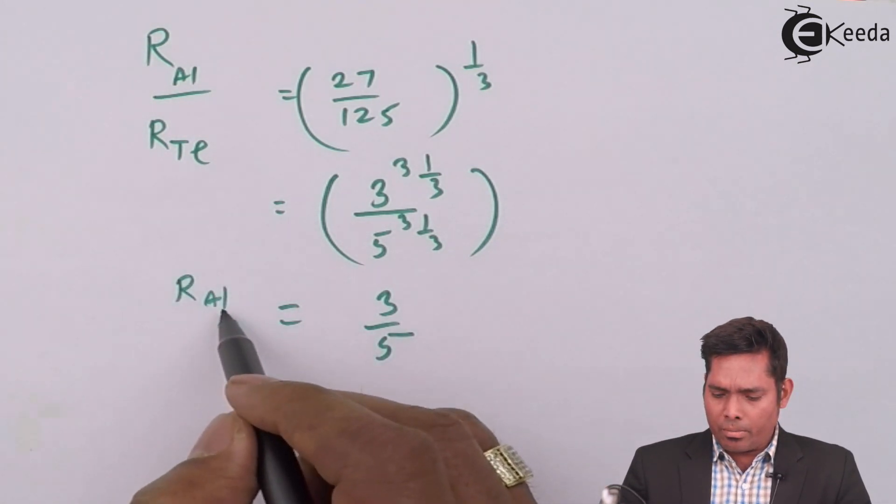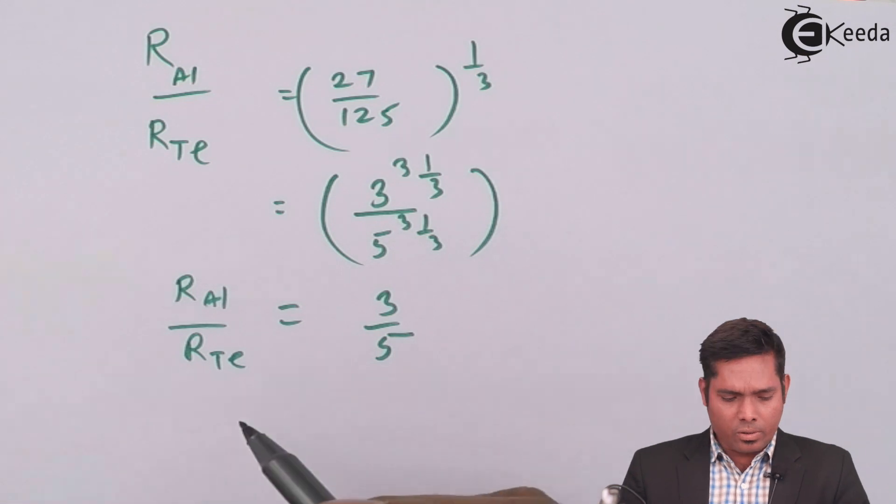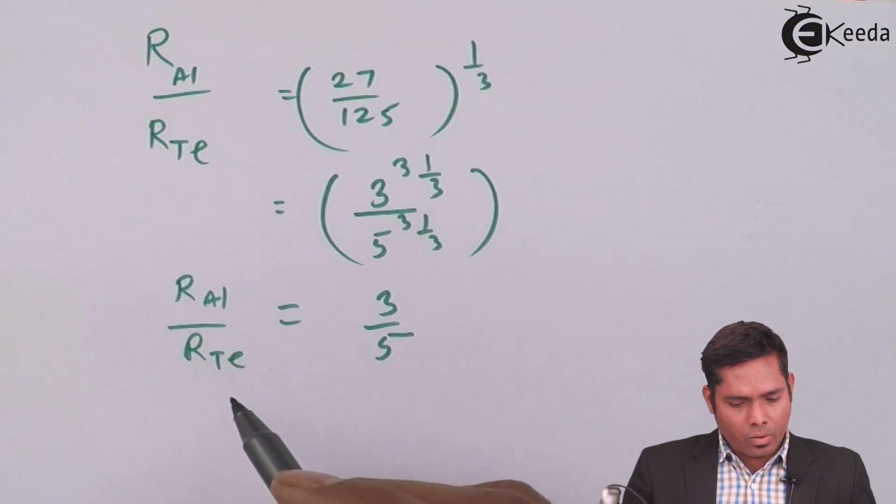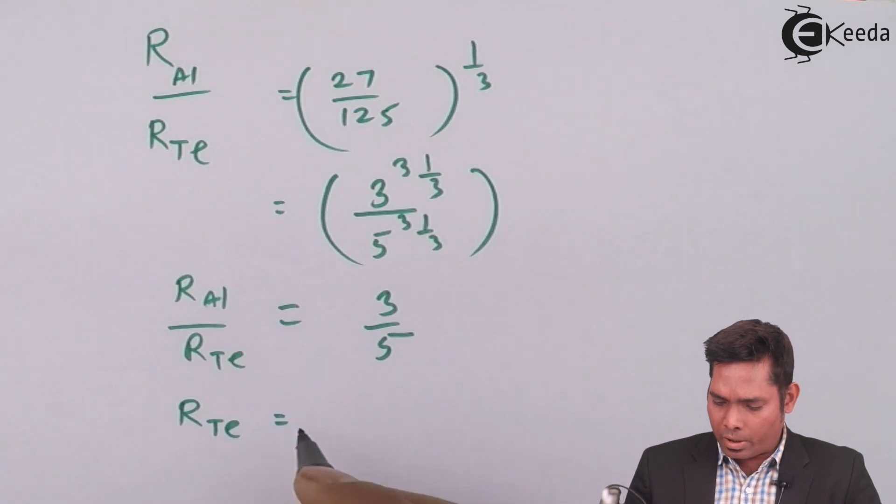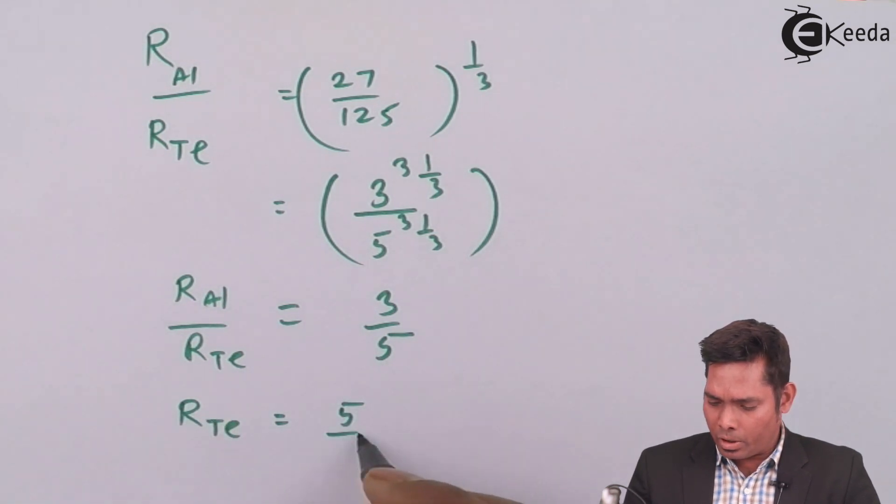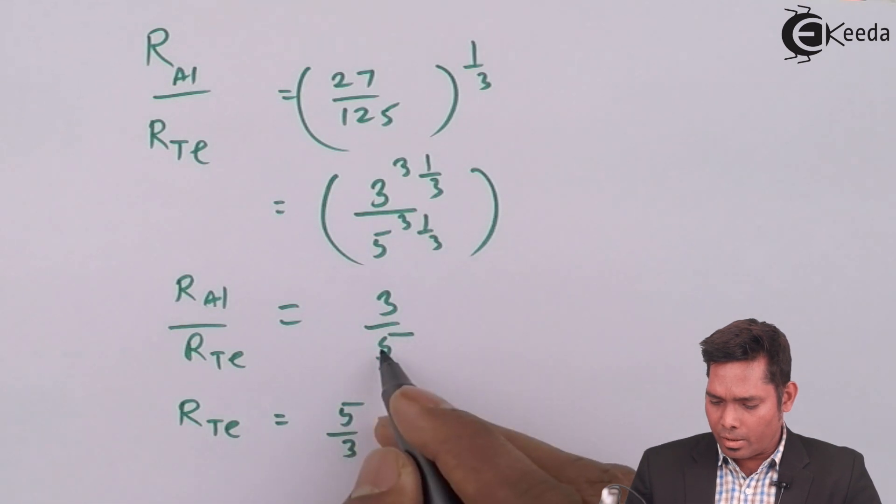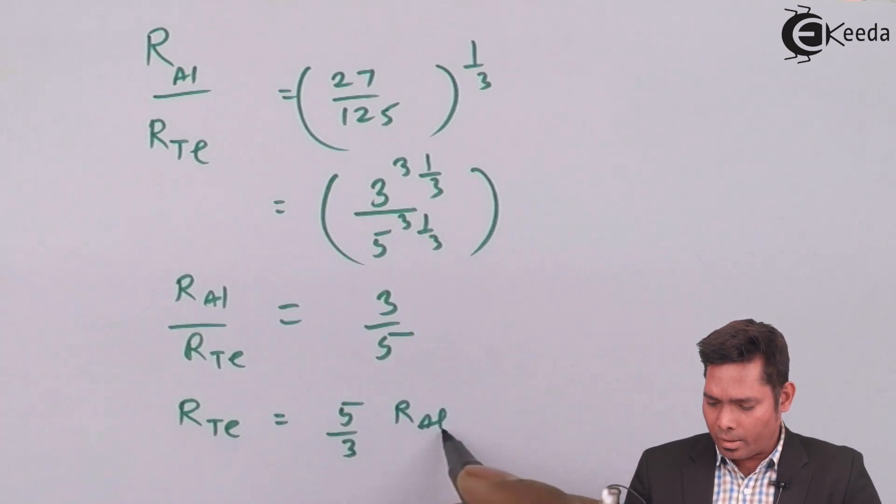Radius of aluminum and radius of Te is this. Now, our question is, R_Te is how much? R_Te will be 5 by 3 times, because this goes to that side, and R_AL.